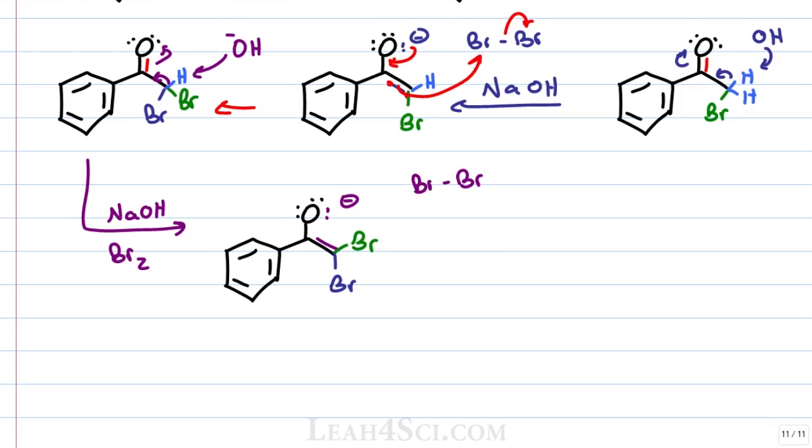One more time the enolate collapses back down, the pi electrons reach out for a halogen and we get a third bromine added at the alpha position. The reaction appears to be complete because we have a carbonyl reformed, three bromines added and no more alpha hydrogens.